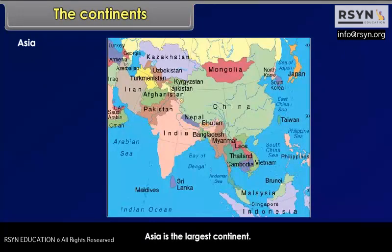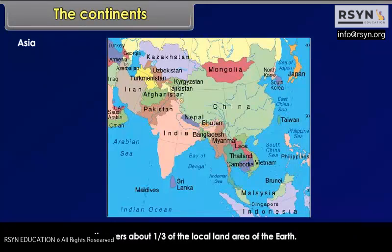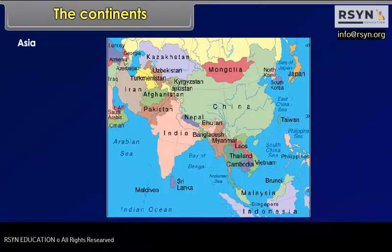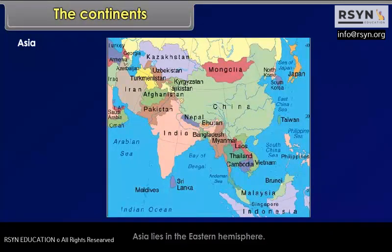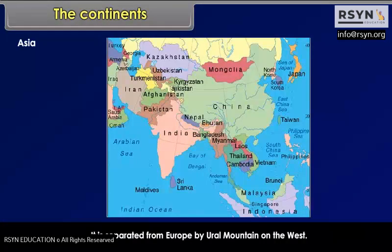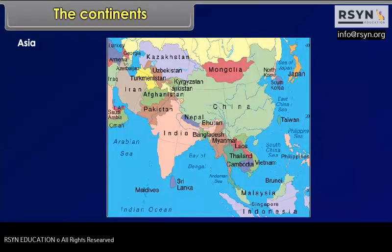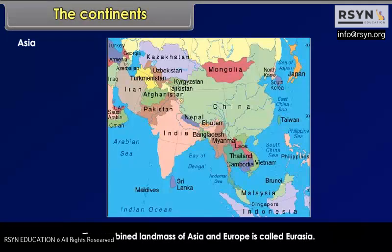Asia is the largest continent. It covers about one-third of the total land area of the Earth. Asia lies in the Eastern Hemisphere. It is separated from Europe by the Ural Mountains on the west. The combined land mass of Asia and Europe is called Eurasia.